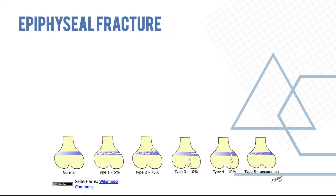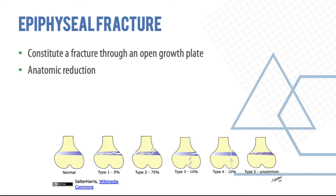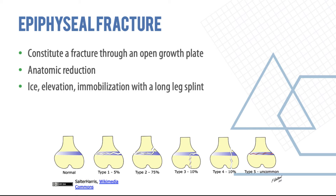Epiphyseal fractures are seen in children and classified using the Salter-Harris classification. Type I: fracture through the physis. Type II: fracture through the physis extending into the metaphysis. Type III: fracture through the physis extending into the epiphysis. Type IV: fracture extending through the epiphysis, physis, and metaphysis. Type V: uncommon crush injury variant. Management requires anatomic reduction immediately, rest, ice, compression, and elevation, and urgent orthopedic referral.